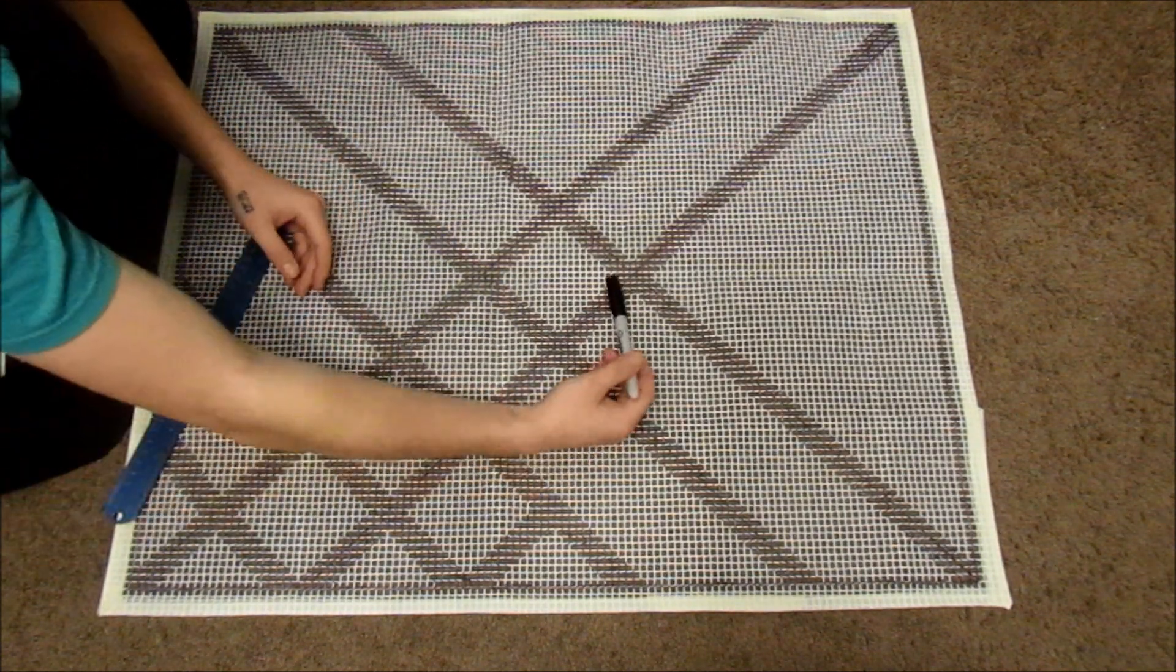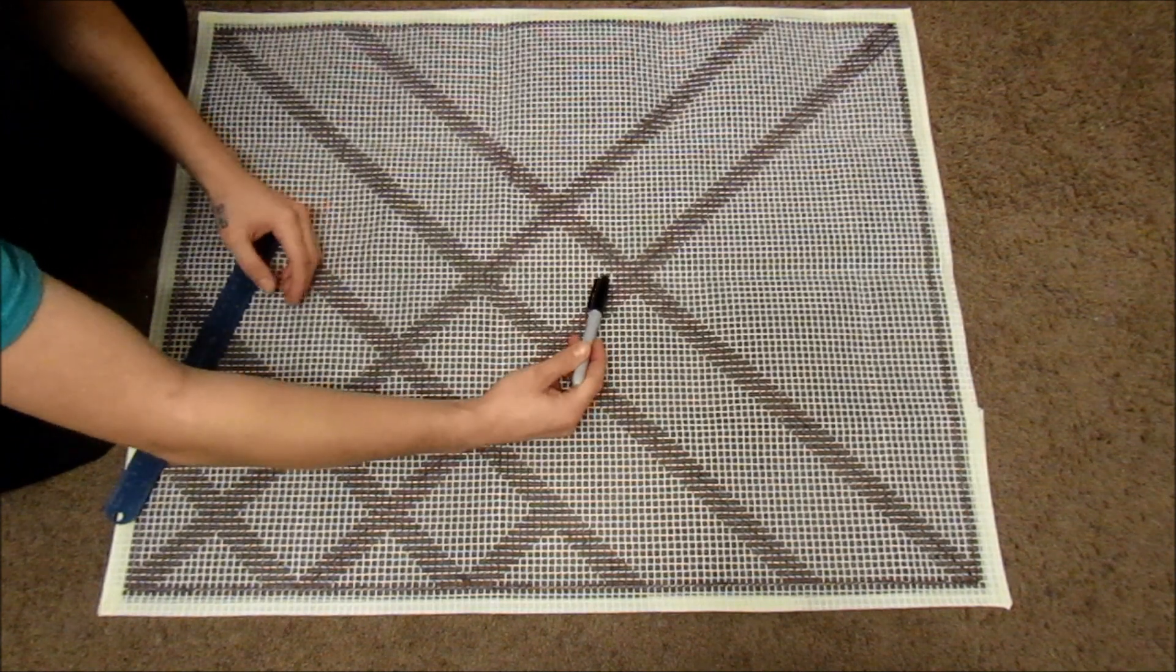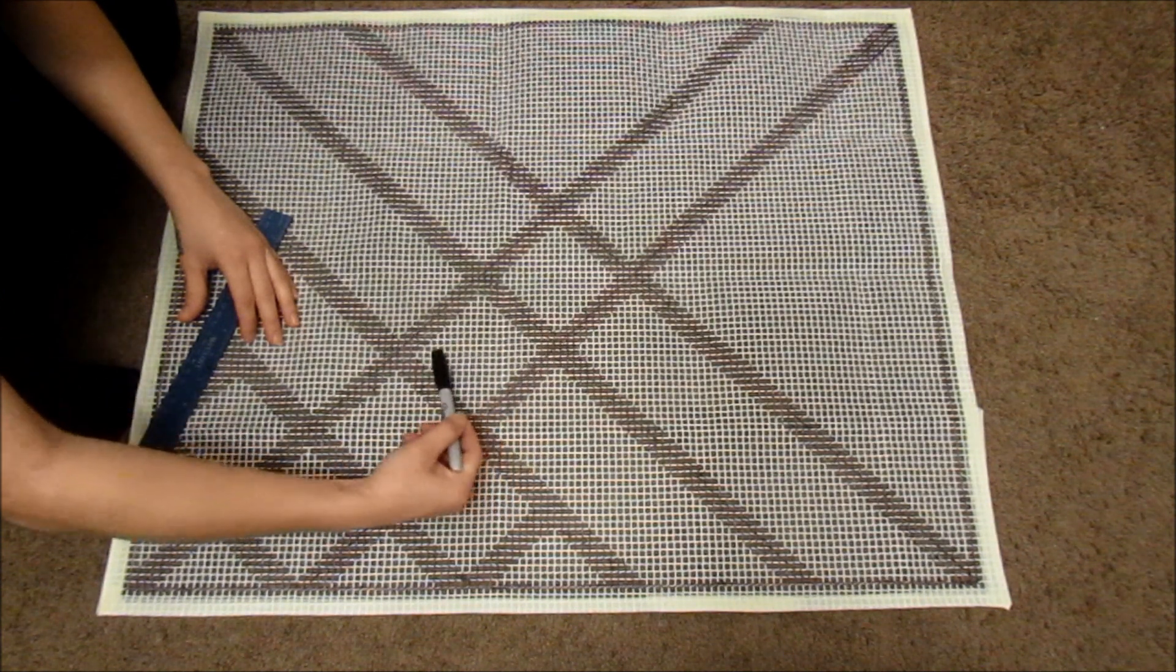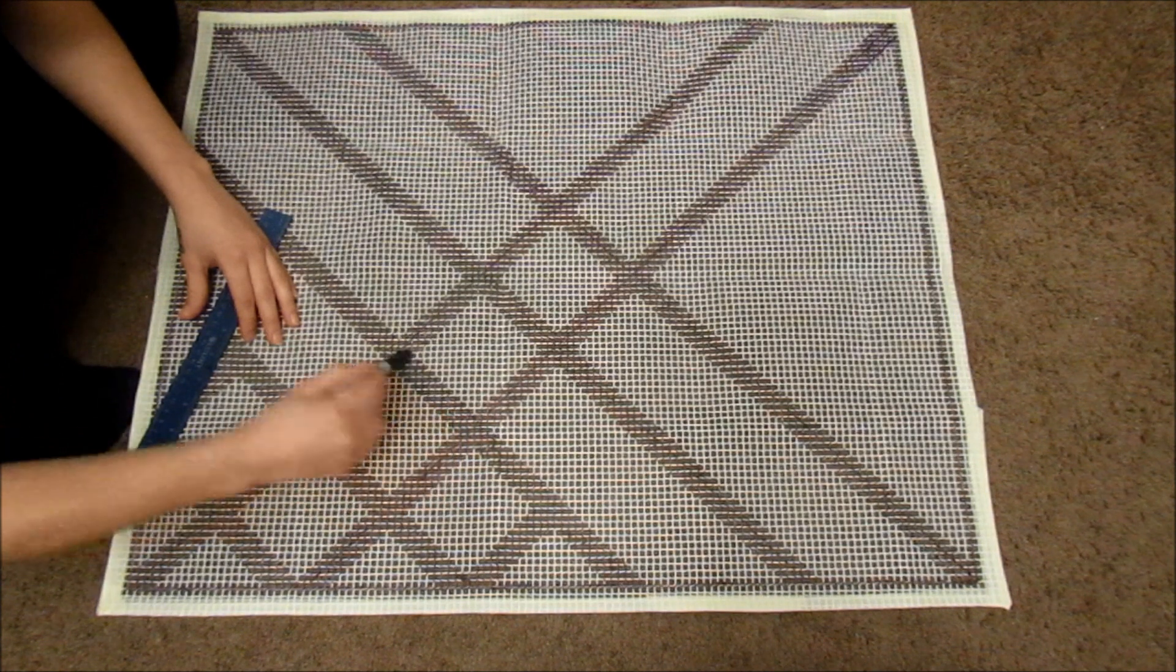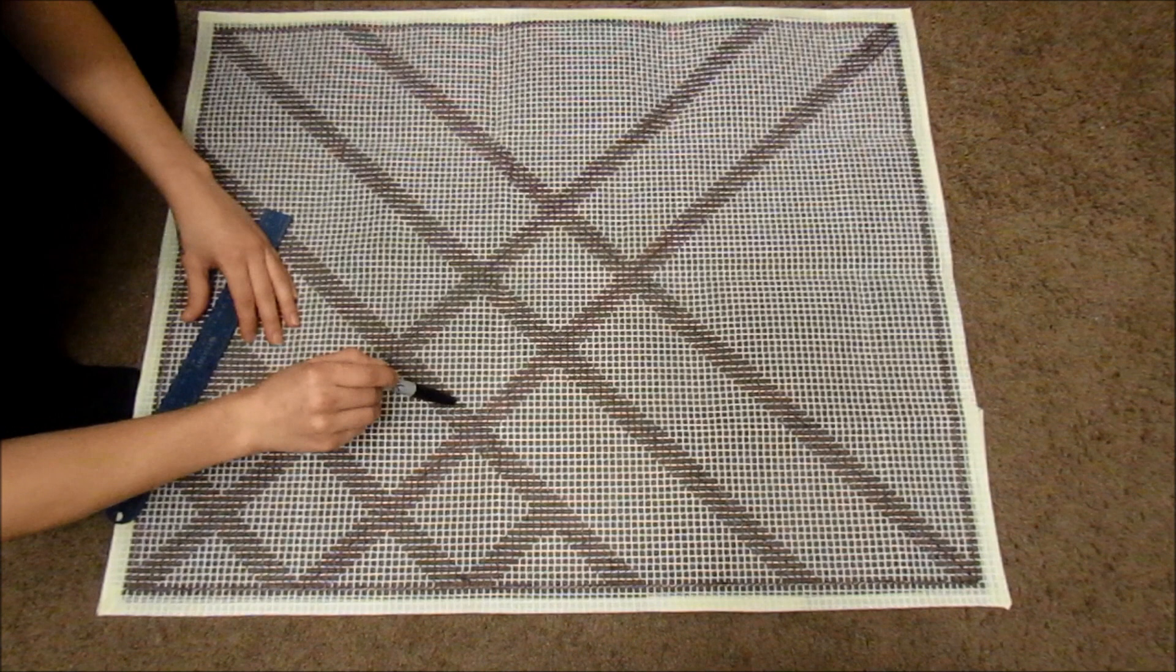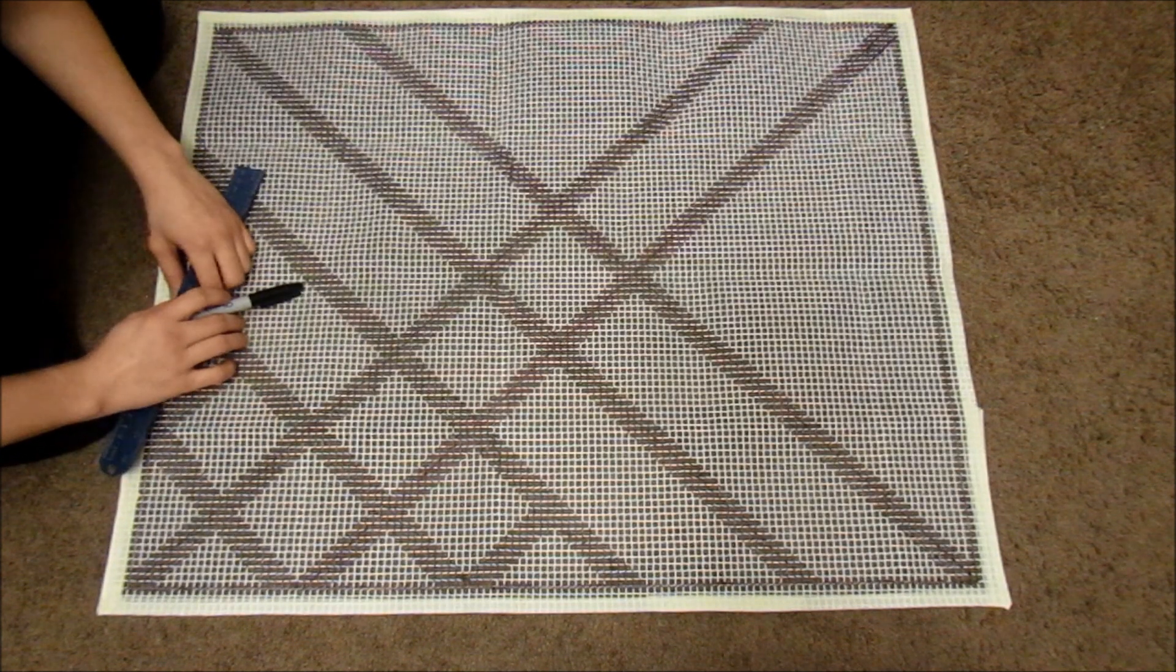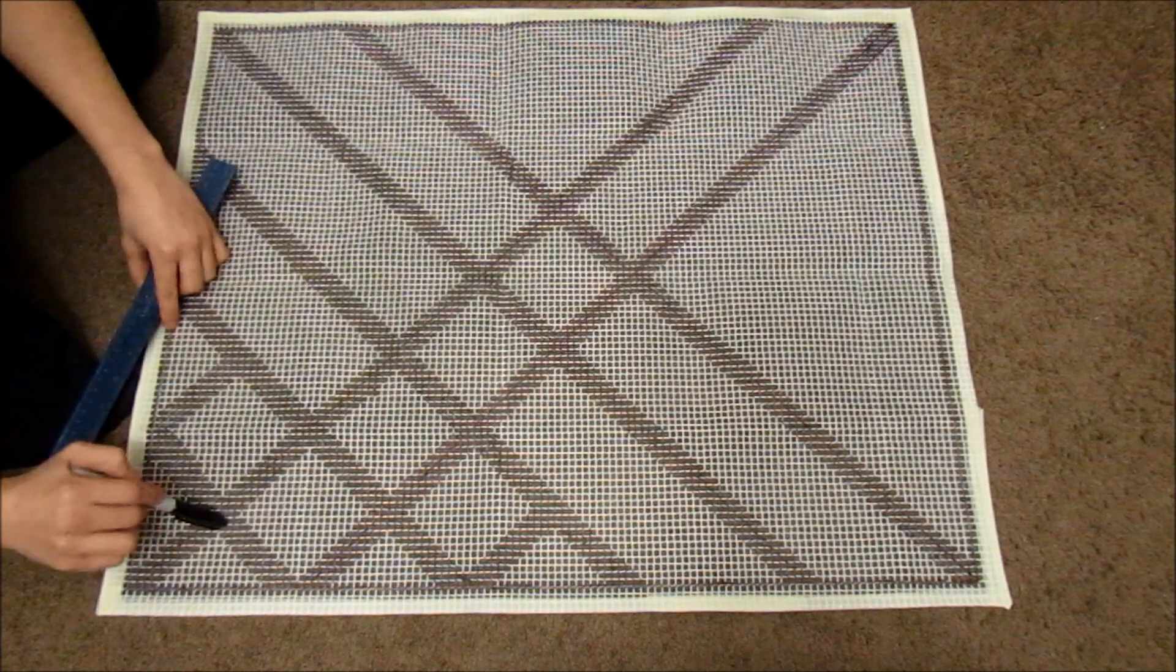Then I counted how many stitches down the square was and did that same thing to this side here, which mine is 18 squares long. So I counted down 18 squares and made another stitch here and again made diagonal marks five squares wide for each square. And then you can just make squares off of that as you go.